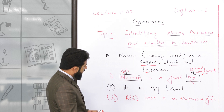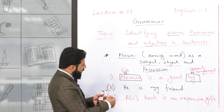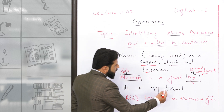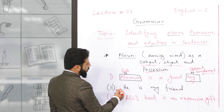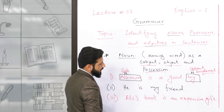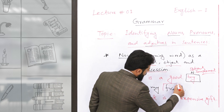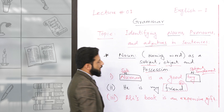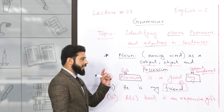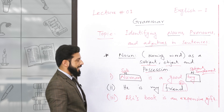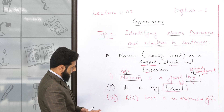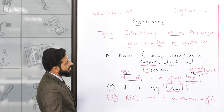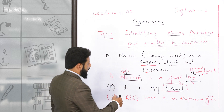دوسرے sentence کو دیکھیں: 'He is my friend'۔ اس sentence کے اندر 'friend' noun ہے اور یہ again complement of this sentence ہے۔